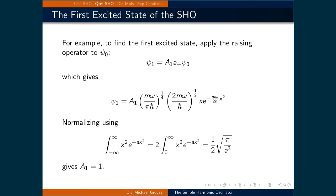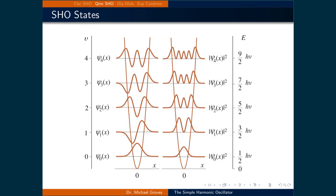For example, to find the first excited state, apply the raising operator to psi-naught; normalizing gives A-1 equal to 1, so the result is (m omega over pi h-bar) to the one-quarter times (2m omega over h-bar) to the one-half times x times e to the negative m omega over 2 h-bar x-squared. Here is a graphical representation of the first five states of the harmonic oscillator. Notice we only solve in one region, since the harmonic oscillator potential exists at all x, so integrals always run from minus infinity to positive infinity.